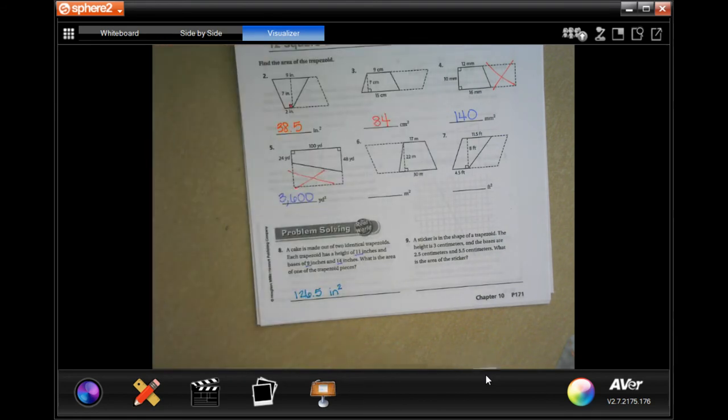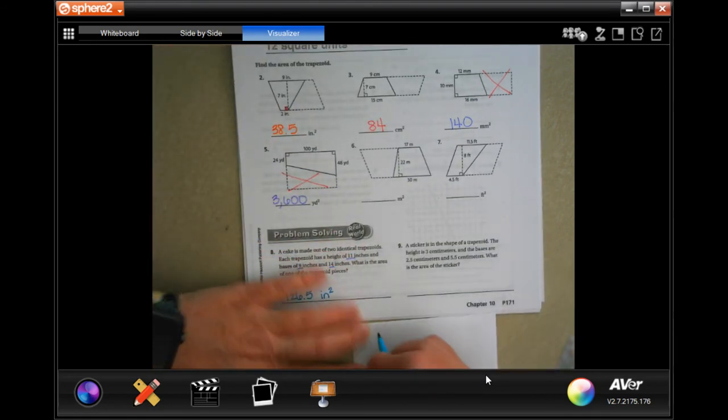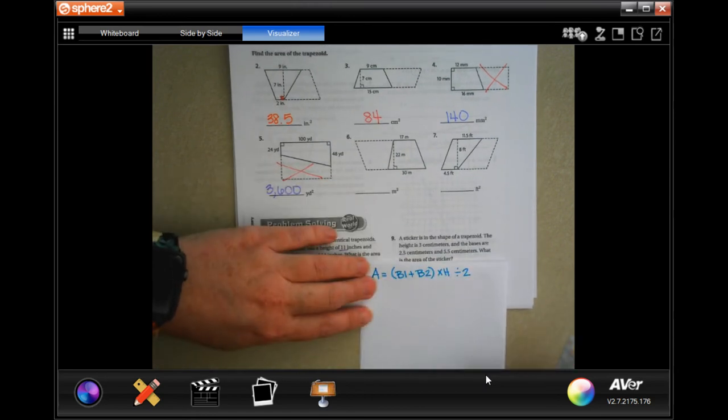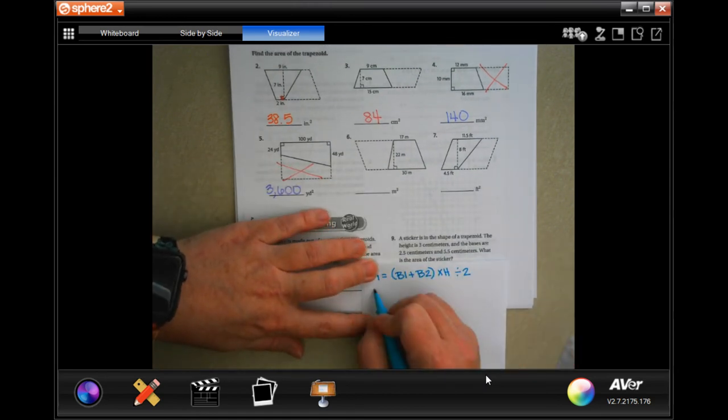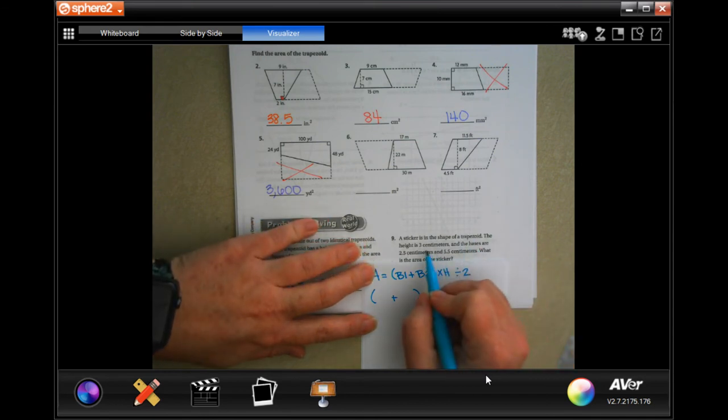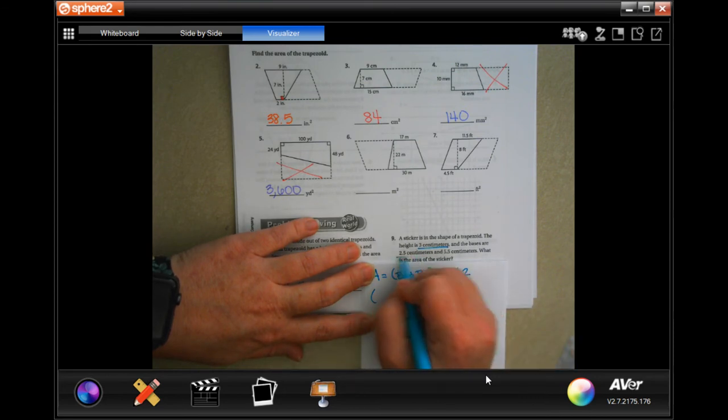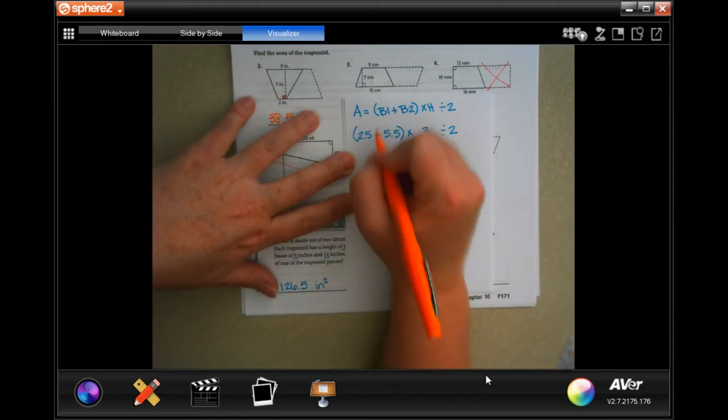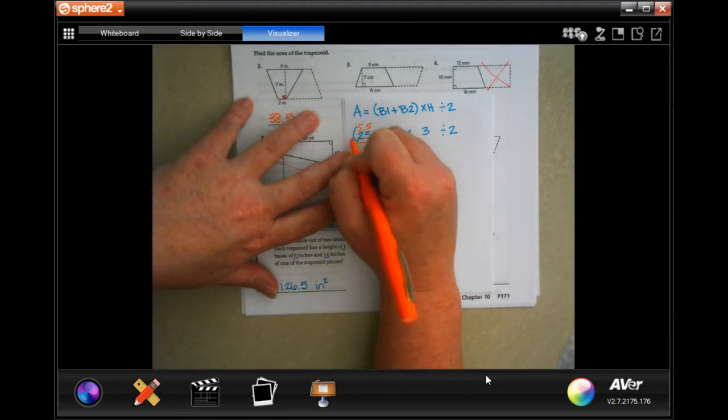All right. These stickers in the shape of a trapezoid, the height is 3 centimeters, so hold on, let me, I'm going to write my formula again. So inside of my parentheses, the height, it tells us, is 3 centimeters. The bases are 2.5 and 5.5. All right, so now I'm just going to do the math. I'm going to put my 5.5 up here and just add them up this way.